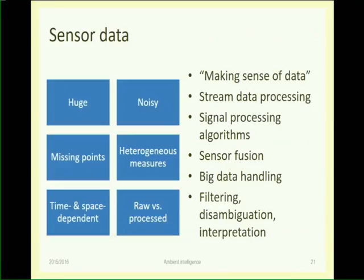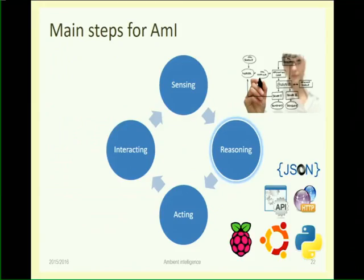A suggestion for our projects: try to avoid relying on a lot of noisy data if possible, otherwise we have to suffer. Reasoning is the easiest part theoretically — it means programming, software that uses already-sensed and analyzed information to do something. This can be server software or algorithms of varying complexity. In this course we will use Python, Linux as a server, and Raspberry Pis as embedded hardware, communicating through HTTP, which is the standard today in the Internet of Things.